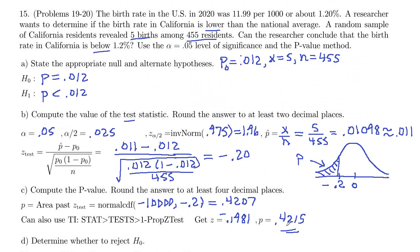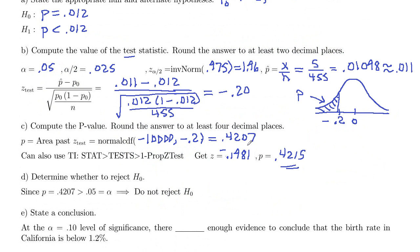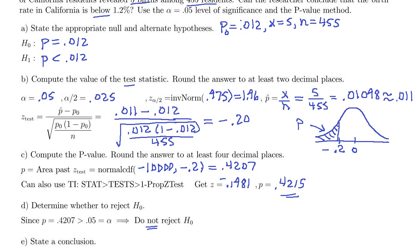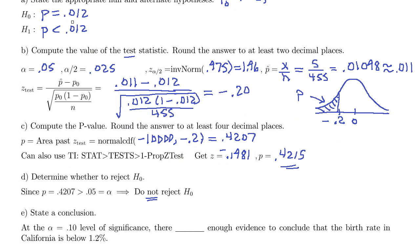So both of these values are greater than 0.05, which is our alpha. So p greater than alpha, we do not reject H₀. So our conclusion here is that at the alpha is 0.05 level of significance, there is not enough evidence, because remember, you do not reject, it's not significant. So there's not enough evidence to conclude the birth rate in California is below 1.2%.